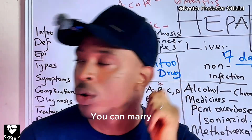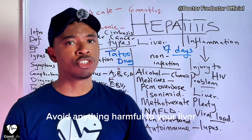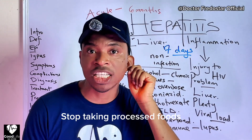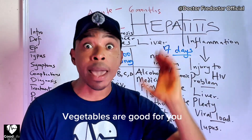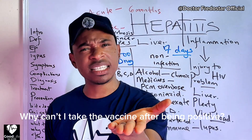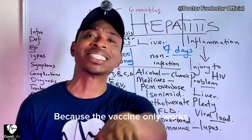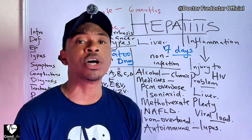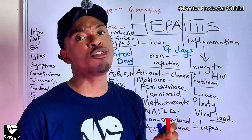What should you eat if you have hepatitis and are positive? Eat your normal food — but avoid anything that can destroy the liver. Leave alcohol, leave smoking, leave all those processed foods. Normal food — vegetables — will help your liver. A balanced diet will help your liver. Why can't I take the vaccine if I am already positive? Because the vaccine only works when you are negative — it protects you from getting the infection. Once it has entered your body, the vaccine will not do anything.